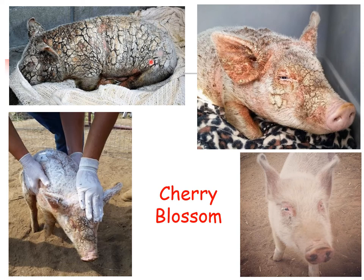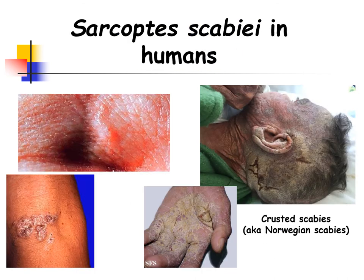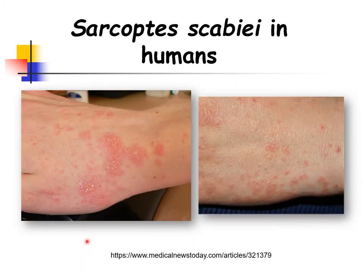Sarcoptes scabiei can also be transmitted to humans, known as human scabies. The primary mode of transmission is person to person; transmission via fomites occurs occasionally. There seems to be rather high host specificity between subspecies of Sarcoptes scabiei, so interspecies transmission and zoonosis is usually minimal and transient. Humans can catch sarcoptic mange from dogs, but the mites cannot complete their life cycle in human skin, causing only temporary skin irritation.